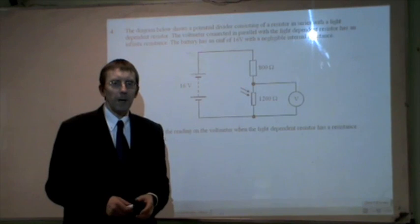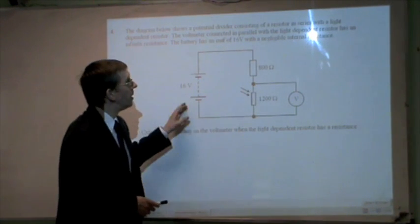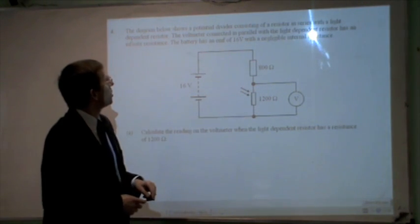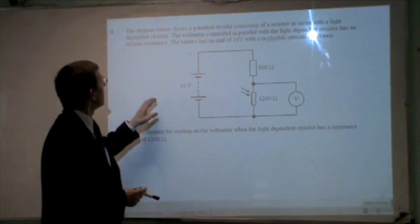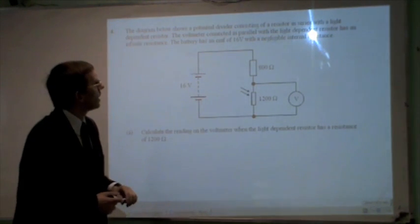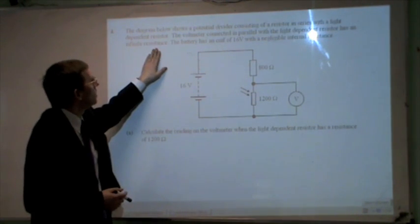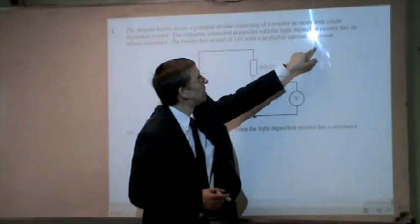I'm going to do a past paper question about potential dividers. The question is, the diagram below shows a potential divider consisting of a resistor in series with a light dependent resistor. The voltmeter connected in parallel with a light dependent resistor has an infinite resistance. The battery has an EMF of 16 volts with a negligible internal resistance.